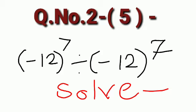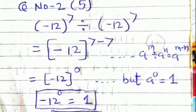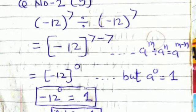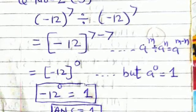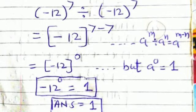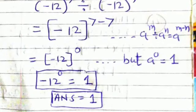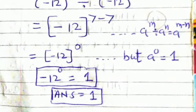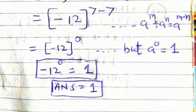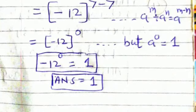a raised to m divided by a raised to n equals a raised to m minus n. So minus 12 raised to 7 divided by minus 12 raised to 7 equals minus 12 raised to 7 minus 7. Answer is minus 12 raised to 0. We know the formula a raised to 0 equals 1. By using this term, the answer of minus 12 raised to 0 equals 1.